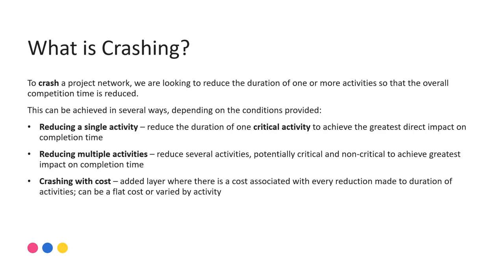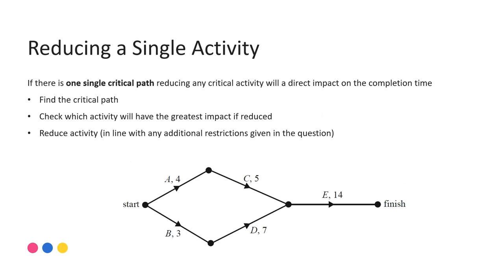Those tend to be the final questions, the last layer of that application. Generally speaking, when you're asked to reduce a single activity or do any reductions at all, you will have done other components of a question. So you may have already identified the critical path by doing your forward and backward scanning as part of the question. In that case, you may choose to identify what is the best reduction to make by looking at your critical path.